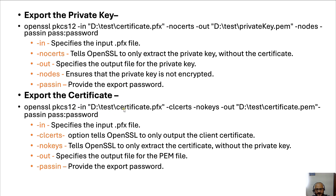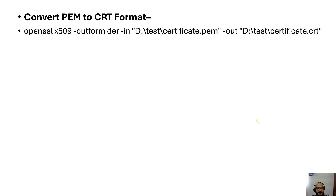Now, if you want to convert the certificate from a .pem file to a .crt file, there is one more command. For that conversion you also have to use the OpenSSL utility — specifically the x509 subcommand. Let's quickly move to the demo and see how it works.